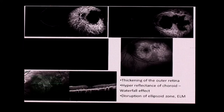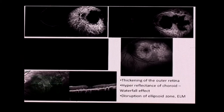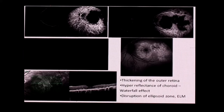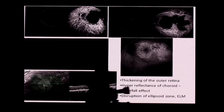On OCT, you see thickening of the outer retina and what is called the waterfall effect in the choroid due to hyper-reflectance. On OCT there is disruption of the ellipsoid zone and external limiting membrane. OCTA shows areas of choriocapillary non-perfusion, though the intervening areas usually appear normal.